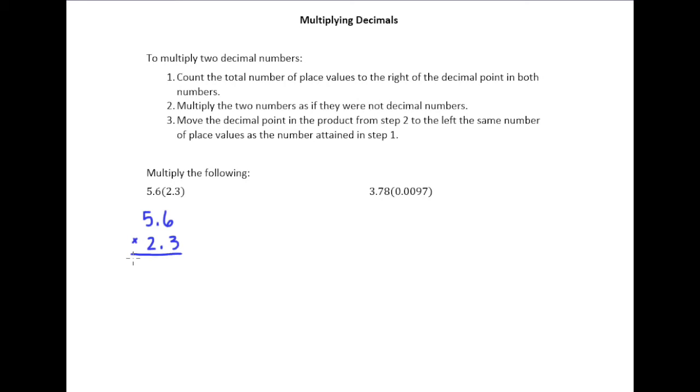We'll start by writing it in this vertical format that we're used to writing multiplication problems in. Step number one wants us to count the total number of place values to the right of the decimal point in both numbers.